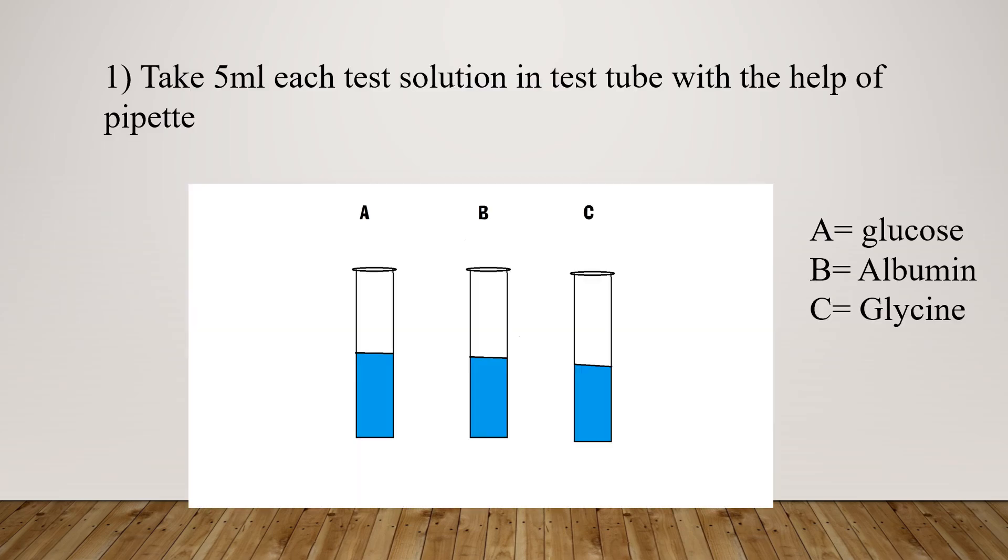Now let's move on to the procedure. Take three test tubes. In test tube A, add 5 ml of glucose. In test tube B, add 5 ml of albumin. In test tube C, add 5 ml of glycine.